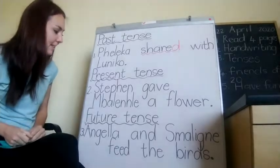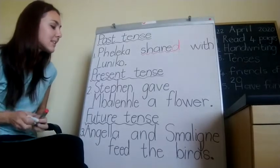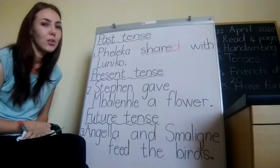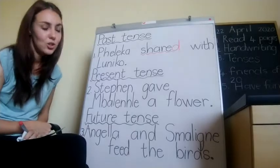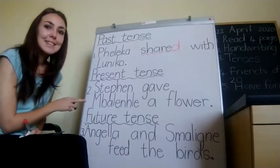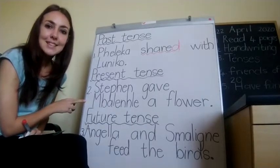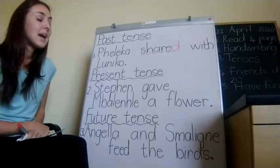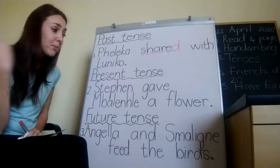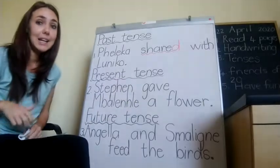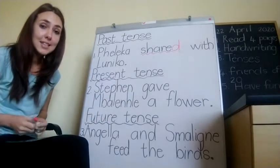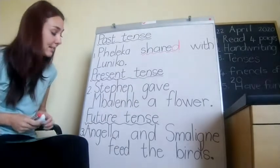Let's do the next sentence: Stephen gave Mbalentle a flower. So what tense is this sentence in? It already happened because he gave Mbalentle a flower, so it is already a past tense sentence.